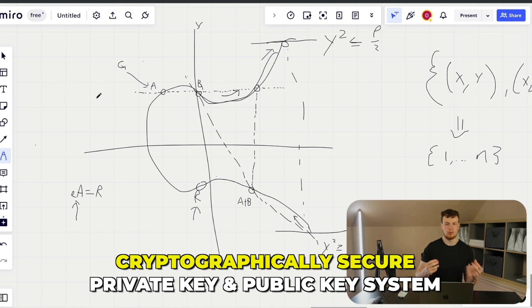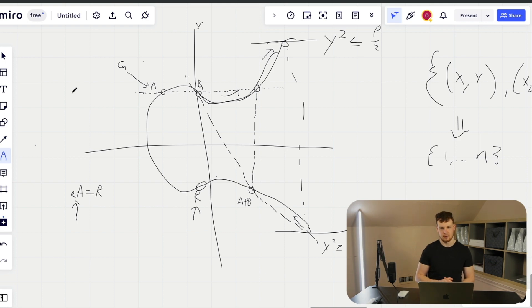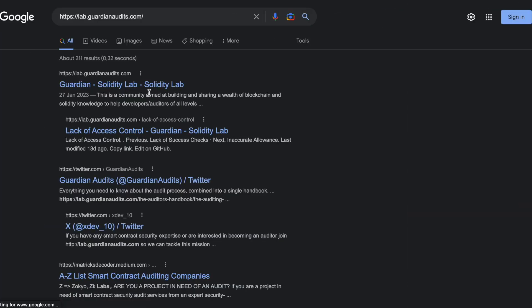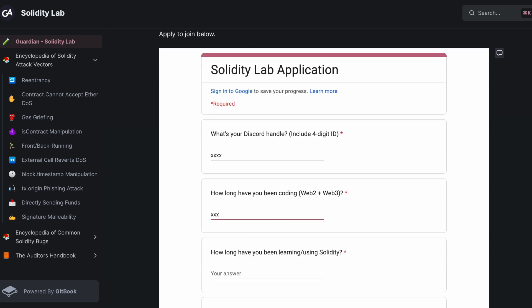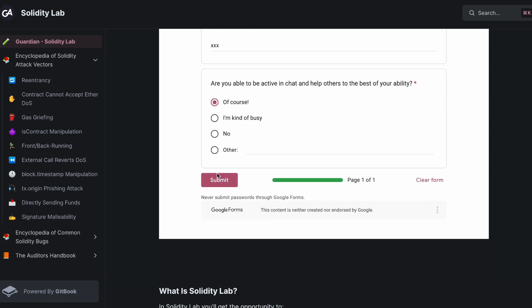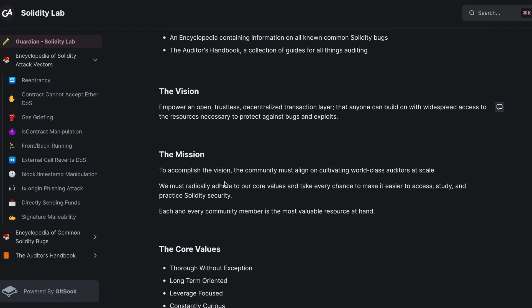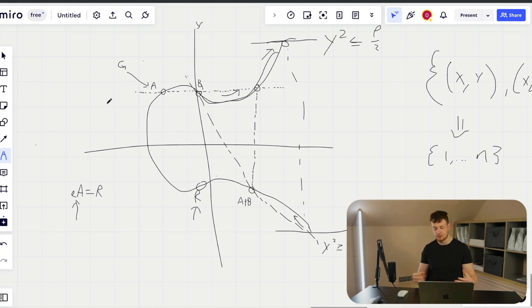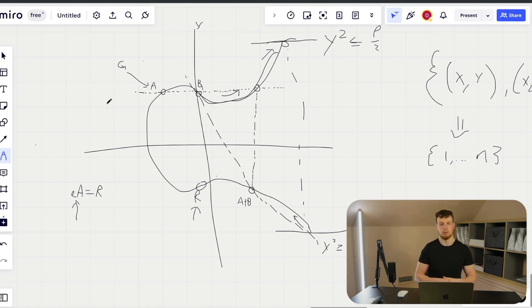And that's a high level overview of how Ethereum uses elliptic curve cryptography to provide a cryptographically secure private key and public key system. Go ahead and watch this video over and over again until it sinks in. It's going to take a few attempts at understanding this stuff to really get a grasp on it. If you have any more questions, go to lab.guardianaudits.com and apply to join our community of like-minded aspiring and practicing auditors where you can ask all things web3 security related, get the chance to team up and participate in practice audits, and even get an opportunity to perform shadow audits with real practicing auditors of real protocols. All right guys, that is all for this time. I'll see you in the next one.